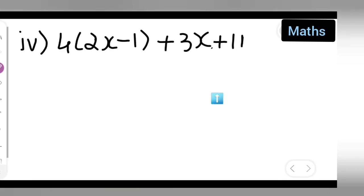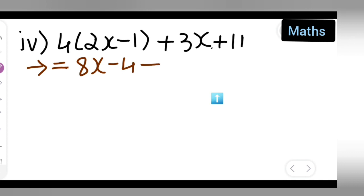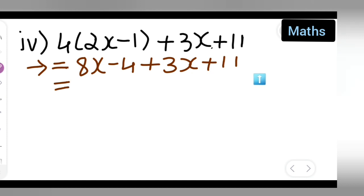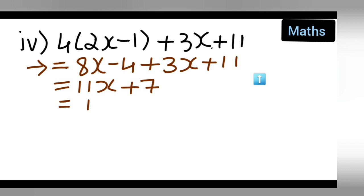Now the fourth expression. Simplify: 4 times 2 is 8, so you get 8x minus 4 plus 3x plus 11. Add the variables: 8x plus 3x gives 11x. Then minus 4 plus 11 gives plus 7. So the simplified expression is 11x plus 7. Now substitute x equals 2: 11 into 2 plus 7 = 22 plus 7.